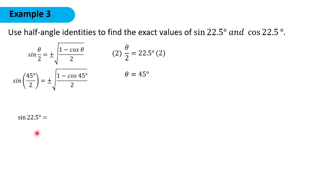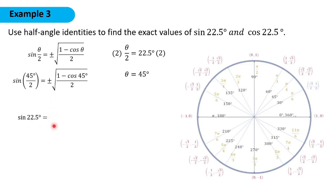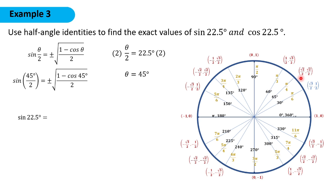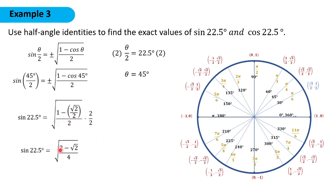Sine of 22.5 degrees is equal to the positive or negative square root of (1 minus cosine 45°) over 2. Since 22.5° is in the first quadrant and sine is positive there, we take the positive square root. From the unit circle, cosine of 45° is √2/2. Multiplying by 2/2, we get (2 minus √2) over 4. Simplifying, sine 22.5° equals the square root of (2 minus √2) over 2.